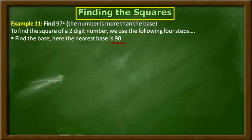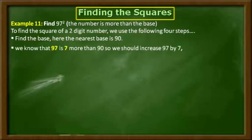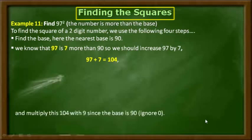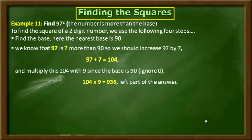Coming to step number two: the number 97 is 7 more than the base 90. So what we have to do here is increase 97 by 7. By adding 97 plus 7 we get the sum as 104. Now we have to multiply the sum 104 with the number 9, ignoring the zeros of the base 90. By multiplying 104 with 9, we get the product as 936, and we take this as the left part of the answer.